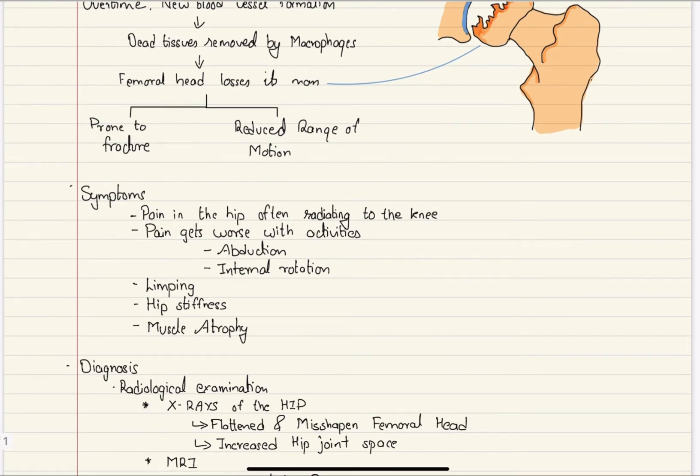Symptoms of Perthes disease include pain in the hip area, often radiating to the knee. The pain usually gets worse with activities such as abduction and internal rotation. There is limping, hip stiffness, and muscle atrophy of the affected limb due to reduced movement.